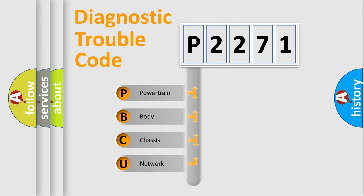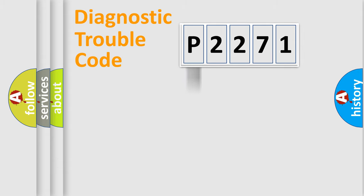We divide the electric system of the automobile into four basic units: Powertrain, Body, Chassis, and Network. This distribution is defined in the first character code.